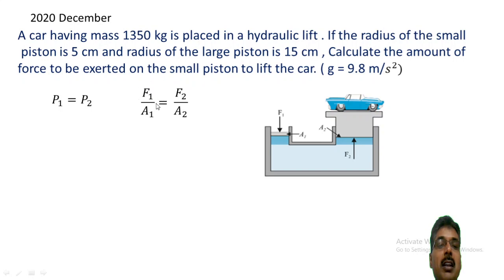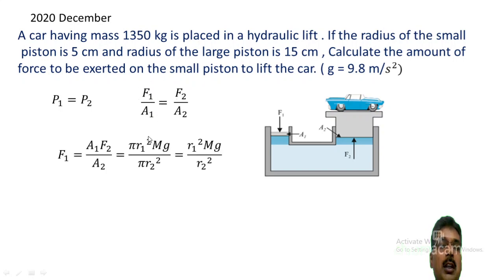We can calculate the value of F1. F1 is equal to A1 multiplied by F2 divided by A2.